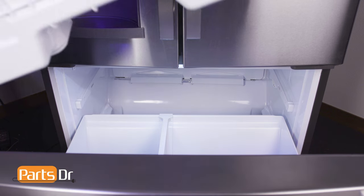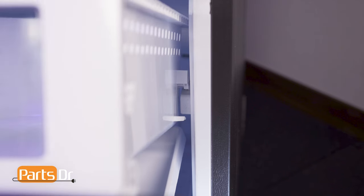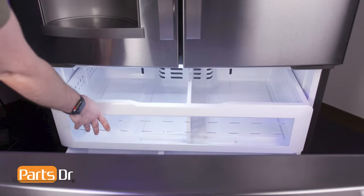To install the upper drawer, align the rear guide wheels on the drawer to the top of the support glide rail in the freezer compartment.